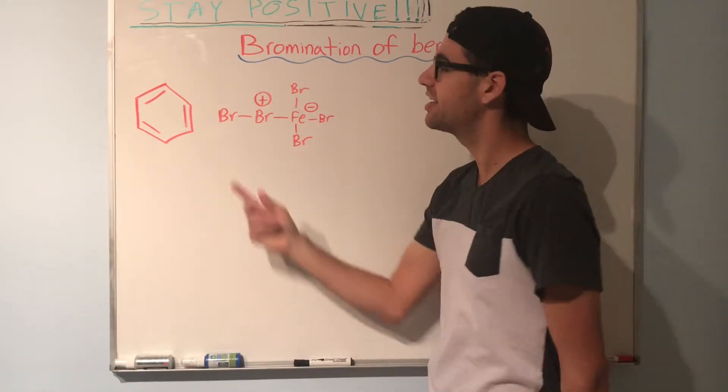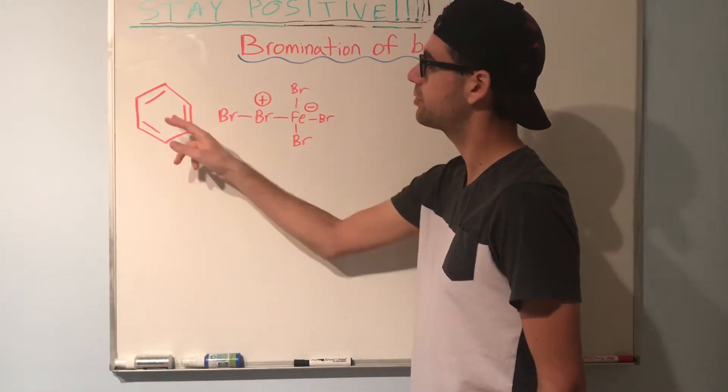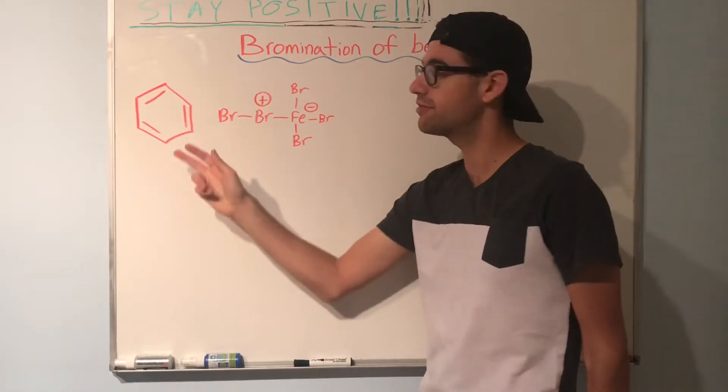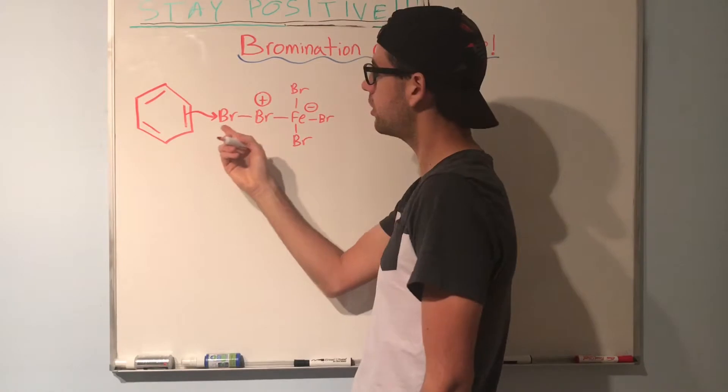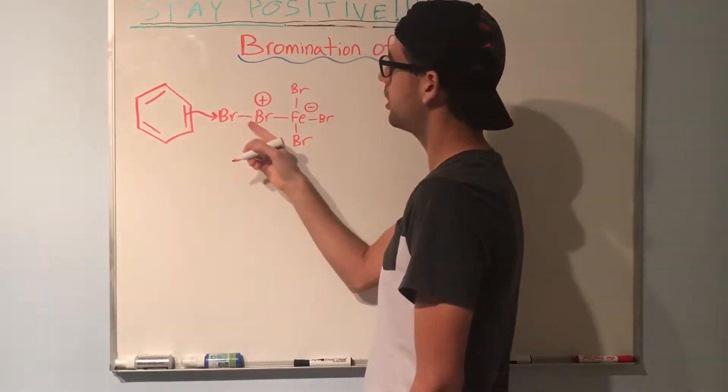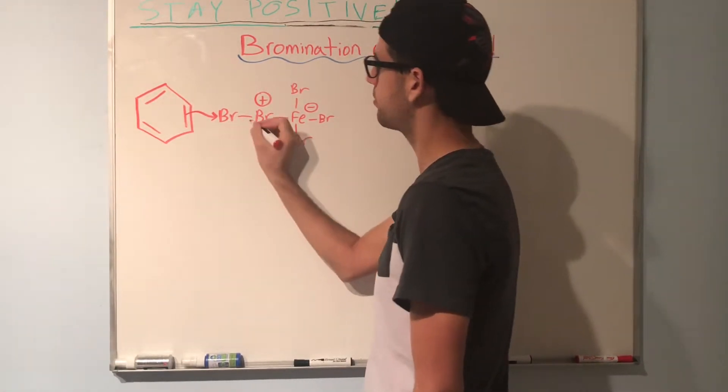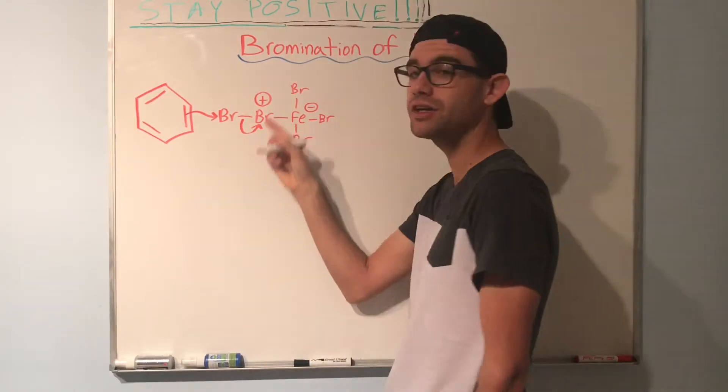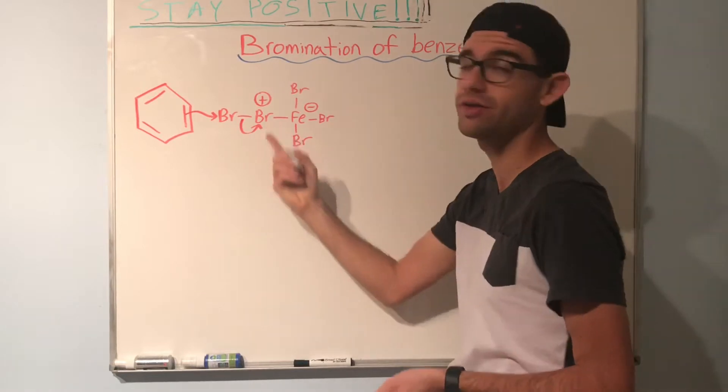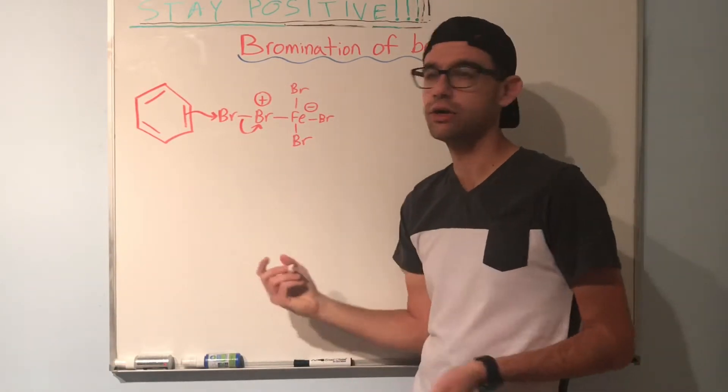The first thing that'll happen is a nucleophilic attack between the pi bond, one of the pi bonds of the benzene, and this bromine right here. In turn, when that happens, this bond between the first two bromines is going to collapse, and the electrons will go to the positively charged bromine, making it super happy because it wants those electrons.